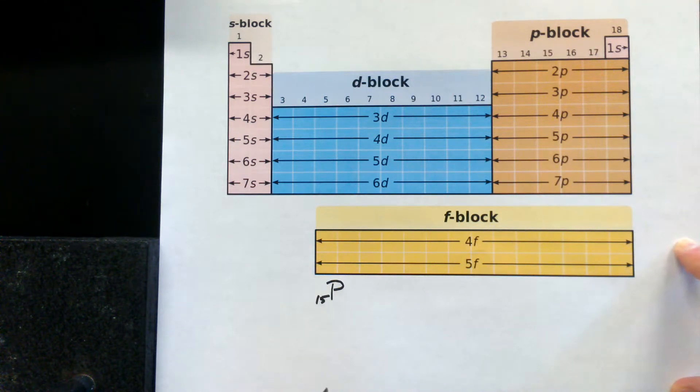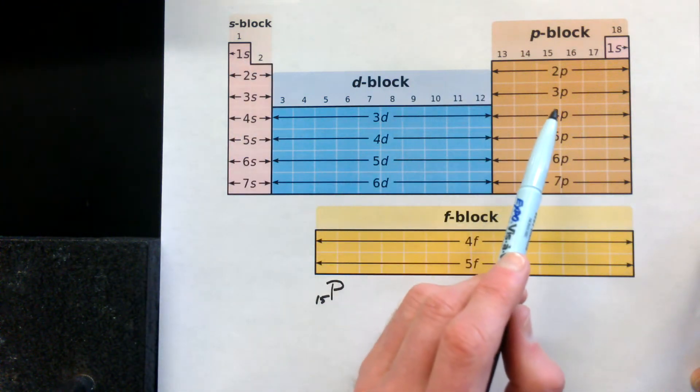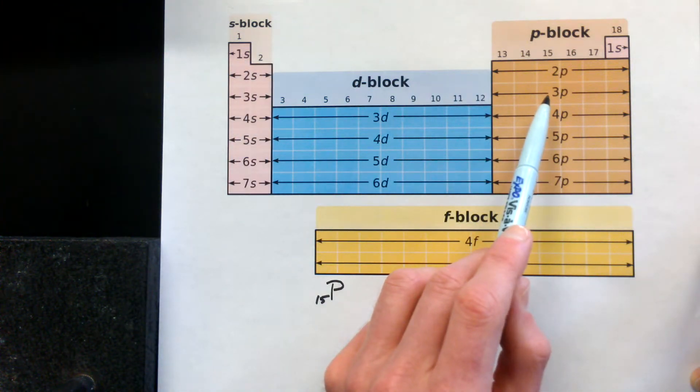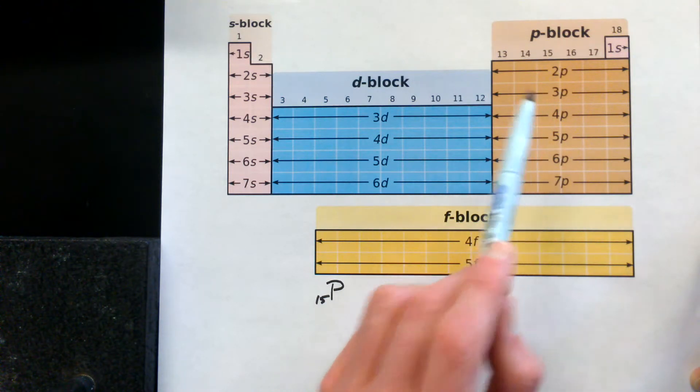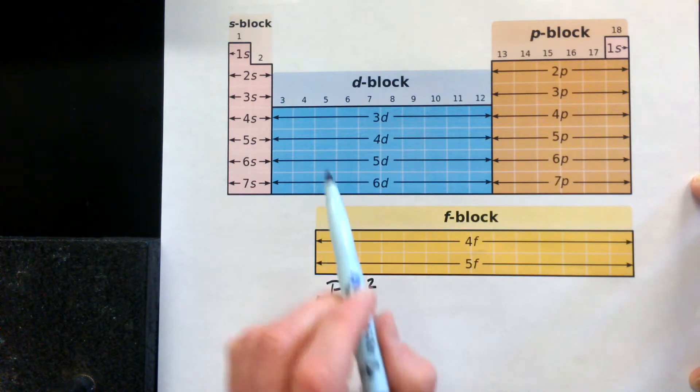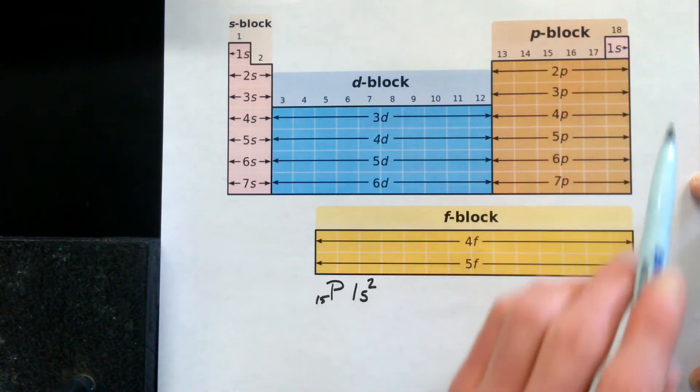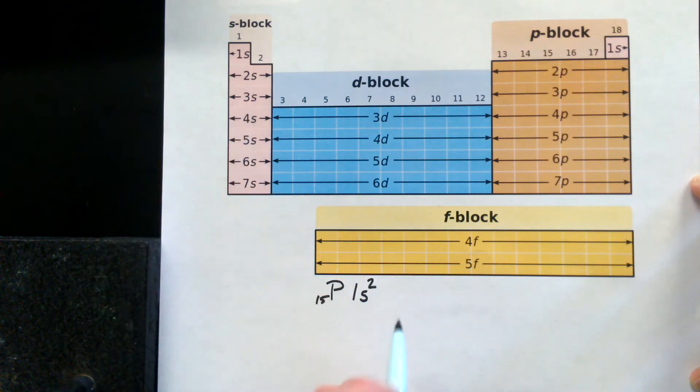With phosphorus, fifteen protons, atomic number fifteen electrons, we assign the electrons following the periodic table, and we have fifteen to go. So we're going to right here is where we're going, to this particular block here. So the first electrons go into the first energy level, the s orbital, and there are two electrons in there. So at this moment, we've occupied four of the electrons.